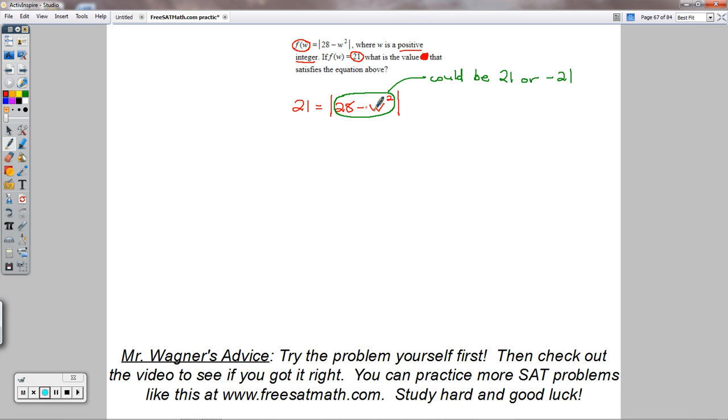So we've got w squared. To make it 21 inside here, this number would have to be 7. And there's no number squared, no positive integer number at least squared that equals 7. So I'm saying 21 is not going to work out.